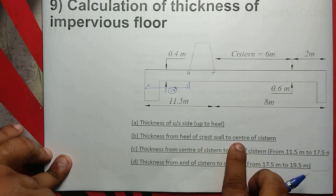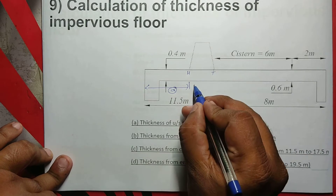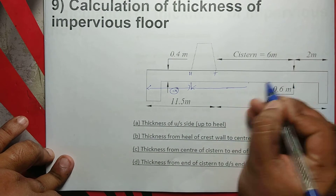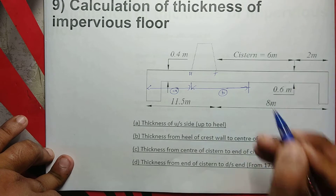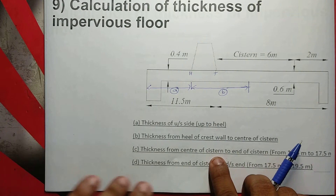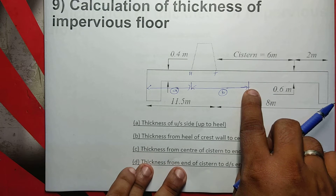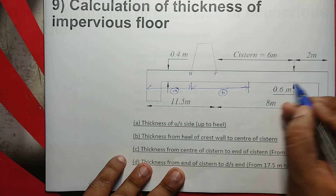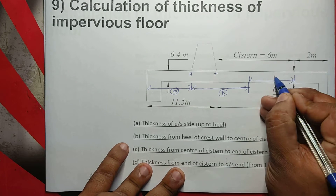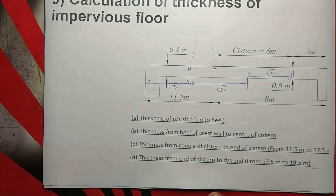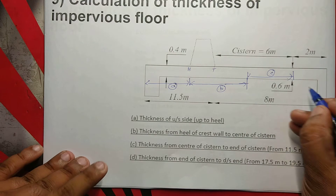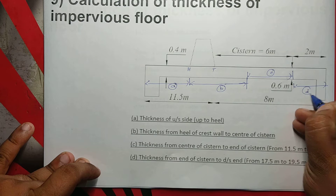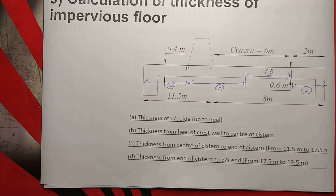Thickness from heel of the crosswall to center of the cistern. Now the cistern is the middle of the cistern. That's B. The cistern is 6m. The end of cistern towards the end of downstream. That's the middle of the cistern. We have to divide into four portions.